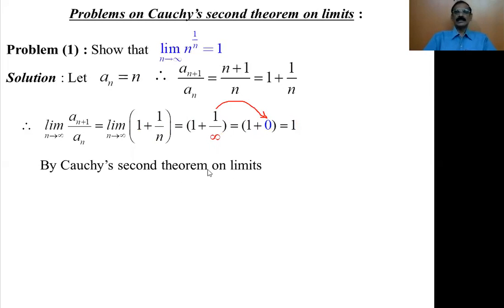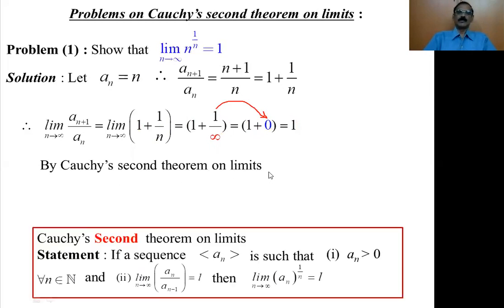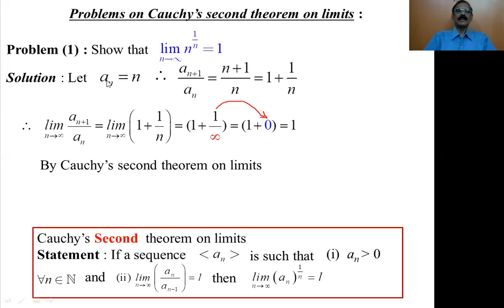By Cauchy's second theorem on limits, the statement says that if a_n is a sequence such that a_n is greater than 0 for all n — which is true here since a_n equals n, and n is a natural number, so a_1=1, a_2=2, a_10=10, a_100=100, all positive. That is the first hypothesis.